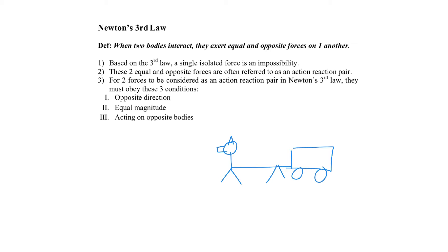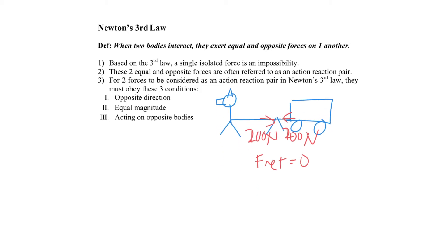The donkey argued: if I pull the cart with 100 Newtons, then Newton's third law says the cart will pull me back with 100 Newtons. So the net force is zero, and it won't move. The farmer said, why don't you pull harder with 200 Newtons? The donkey replied: then the cart will pull me back with 200 Newtons too, so the net force will still be zero. No matter what I do, this cart won't move. So what is the problem with this argument?